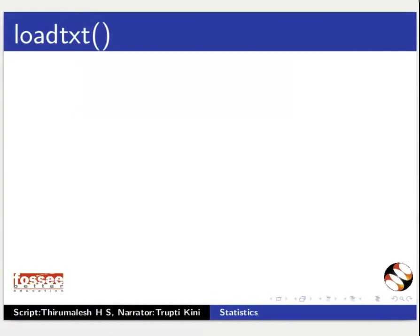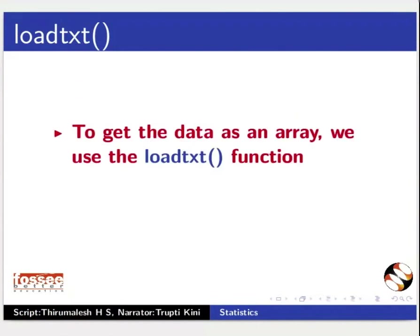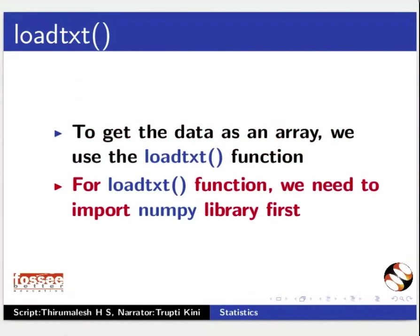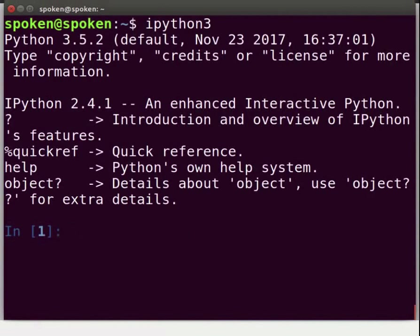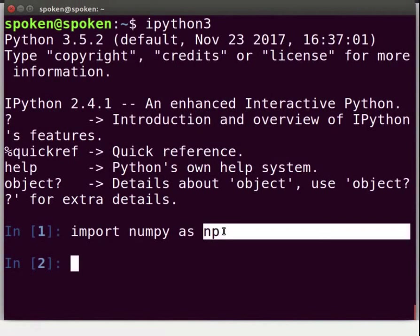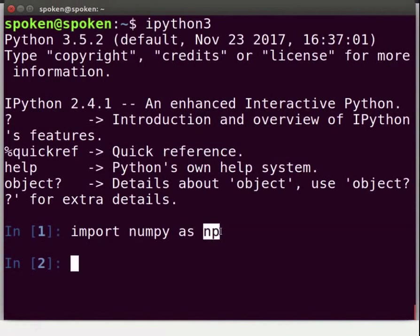Next, we will learn about the loadTXT function. To get the data as an array, we use the loadTXT function. For the loadTXT function, we need to import the NumPy library first. Switch back to the terminal. Now, type IPython3 and press Enter. Type: import numpy as np and press Enter, where np is an alias to NumPy and it can be any name.